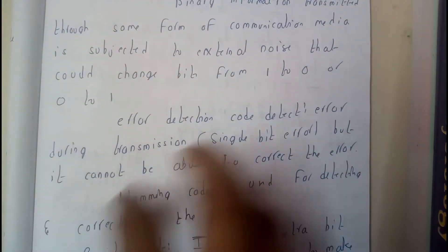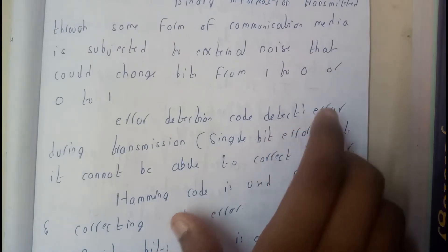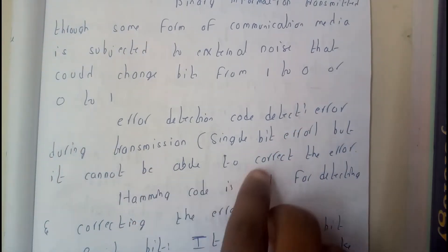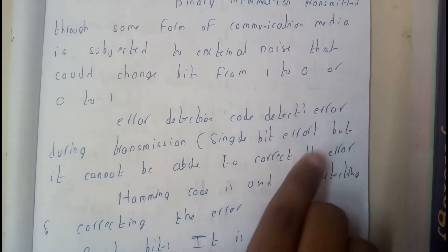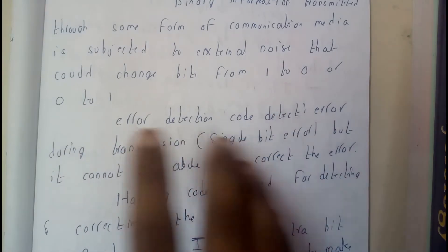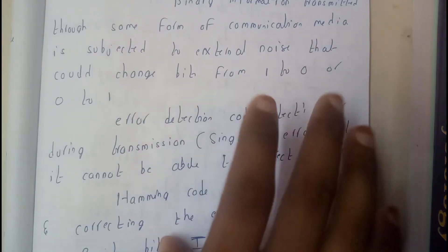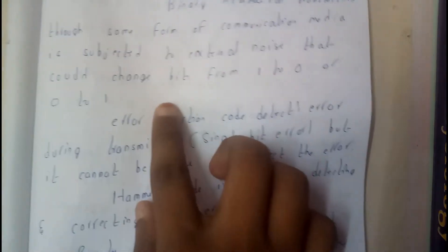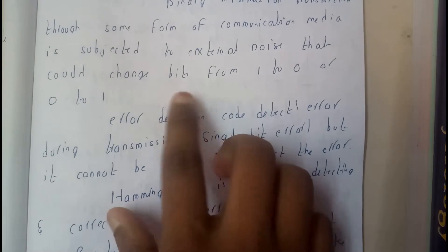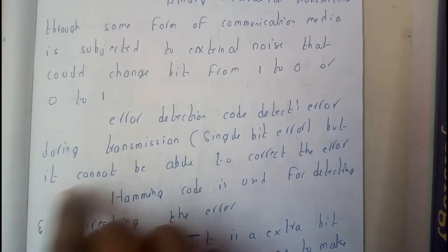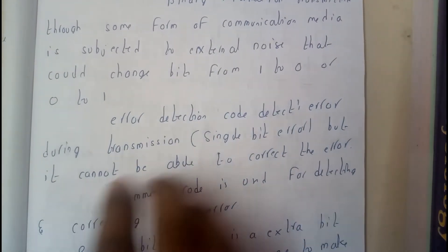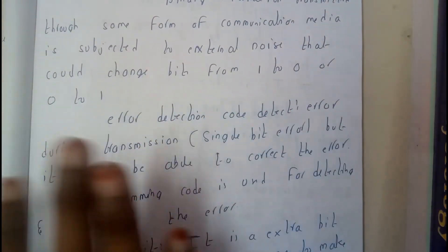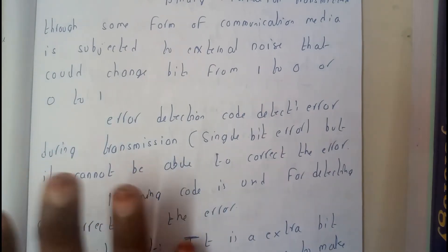Error detection code detects the error during transmission — single bit error. But it cannot specify whether zero is changed to one or one is changed to zero. It cannot specify and it cannot correct it. It just says that an error is found, that's it.